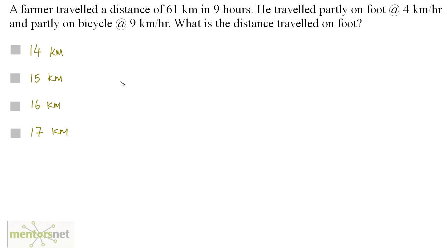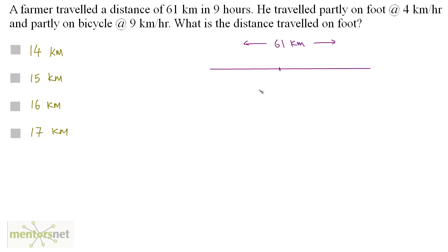A farmer travelled a distance of 61 kilometers in 9 hours. He travelled partly on foot at the rate of 4 kilometers per hour and partly on bicycle at the rate of 9 kilometers per hour. What is the distance travelled on foot? Let the distance travelled on foot be x km, so the distance on bicycle is 61 minus x kilometers.